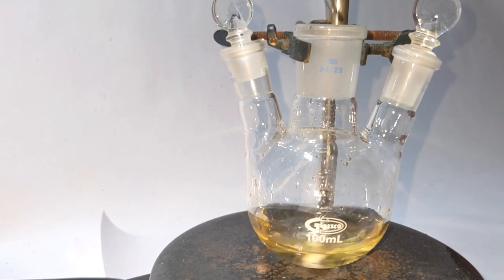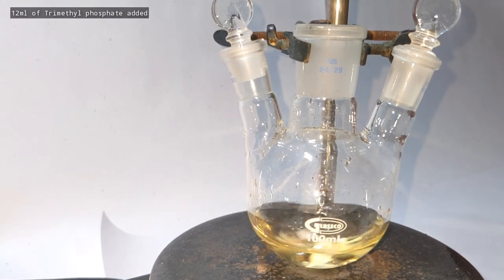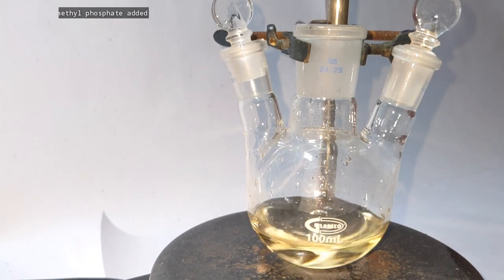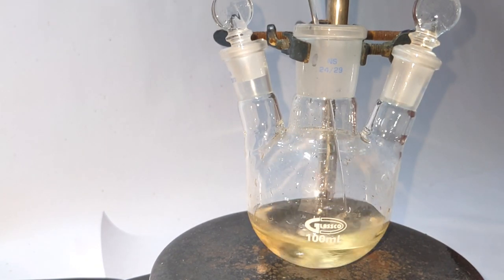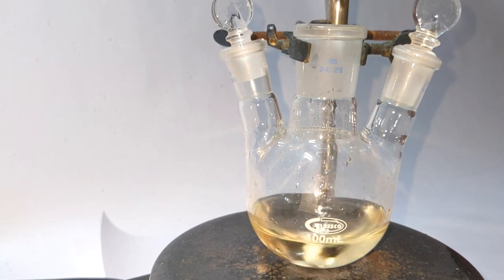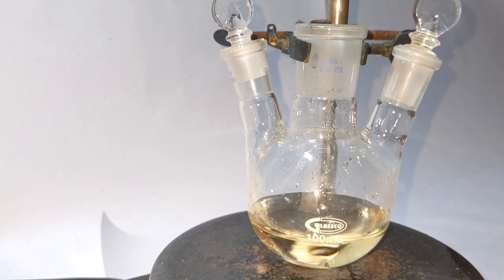A stir bar was then introduced and with the stirring on, add 12 ml of trimethyl phosphate using a glass dropper. The dropper was used to add the trimethyl phosphate in small batches rather than adding it all at once.